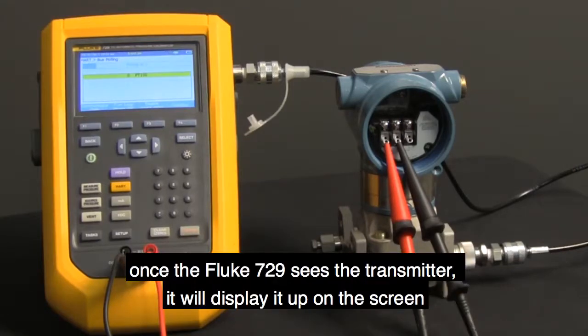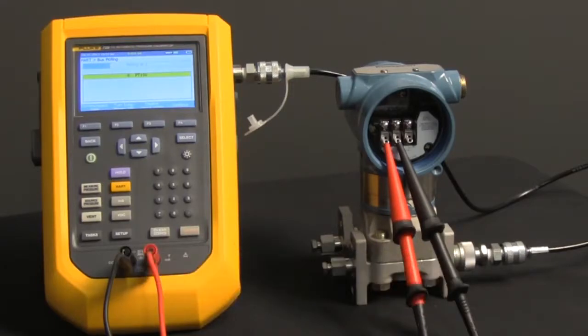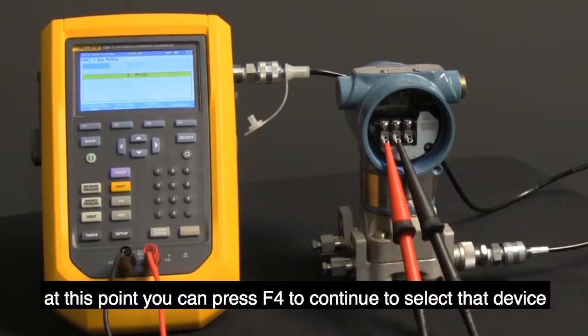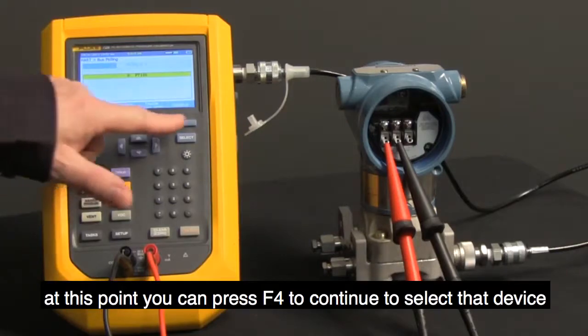Once the Fluke 729 sees the transmitter, it will display it up on the screen. At this point, you can just press F4 to continue to select that device.